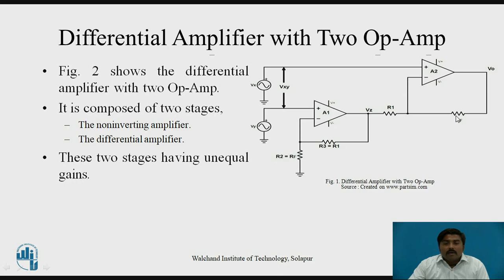RF is the feedback resistance. The circuit has 2 stages: the first stage is A1, which is a non-inverting amplifier. Its output is Vz, and R3 is the feedback resistance of that non-inverting amplifier stage. The second stage is a differential amplifier, where Vz acts as input to the inverting terminal and Vx is directly connected to the non-inverting terminal, giving 2 inputs. The first stage has only single input Vy at the non-inverting terminal, so it is called the non-inverting amplifier stage.